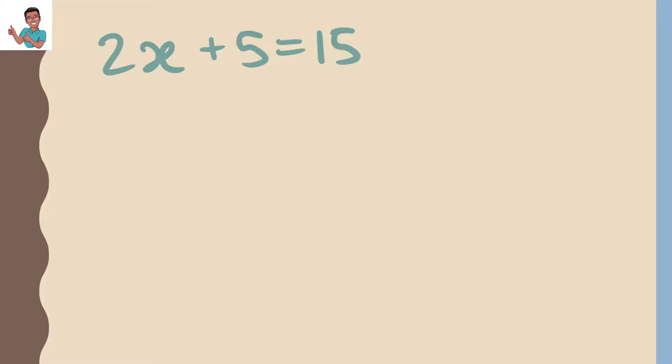Let's look at this. 2x plus 5 equals 15. We want to move the plus 5 to the other side. So we minus 5 on both sides, giving us 2x equals 10. And then we want to get this 2 to there. So we divide by 2 on both sides. x equals 10 over 2, and we can simplify this to 5.